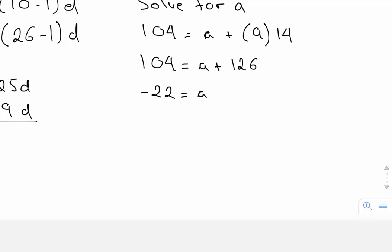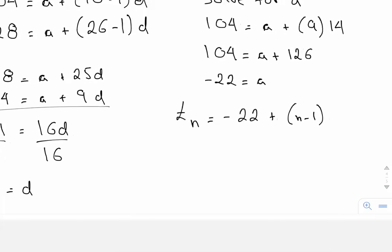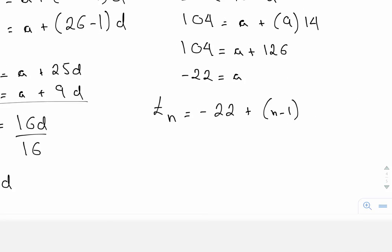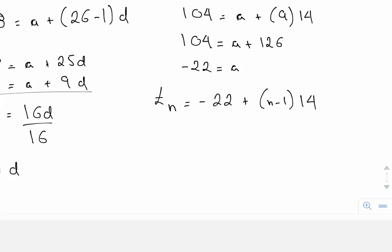So my general term, to answer the first part of this question, T sub n, is going to be negative 22 plus n minus 1 times 14. N minus 1 times 14.